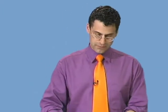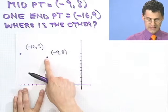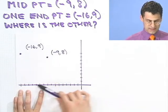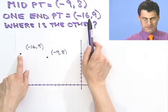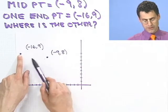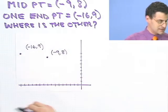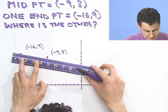So I try to graph it here in advance, and you can see I graphed minus 9, 8 over here. This is right there. Minus 16, 9 is over here. So in fact, this is one of the endpoints, you see. This is supposed to be the midpoint. So where should that other point lie? Well, you can sort of imagine connecting this line, these two points together.